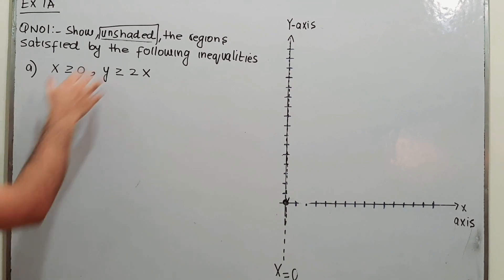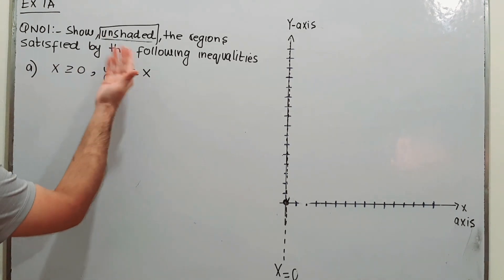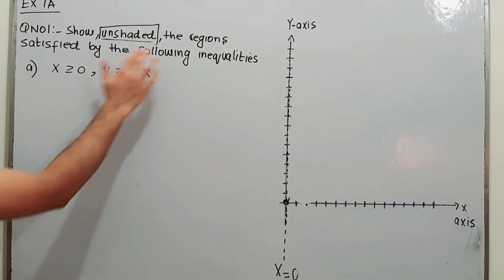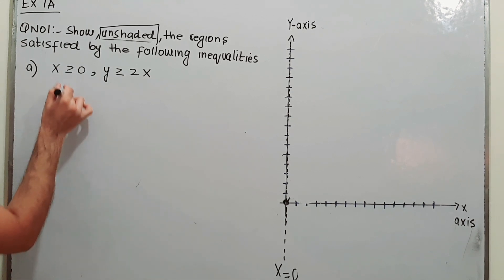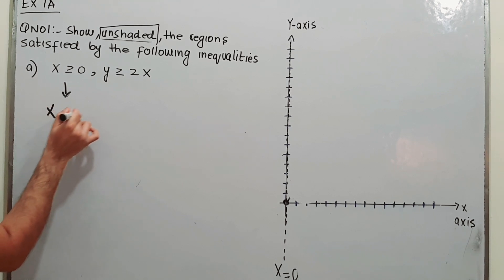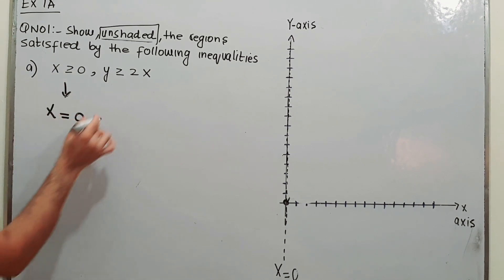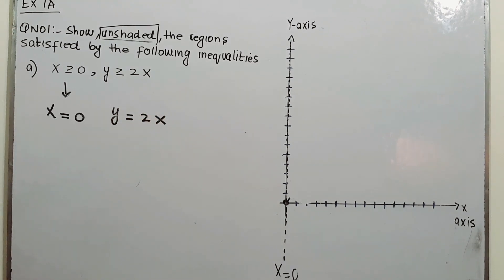Question number 1 says: show unshaded. We have to keep the region unshaded which is our required region — the region satisfied by the following inequalities. We have two inequalities here. First of all we need to identify the lines represented by these equations. This equation is x equal to 0, and this one is y equal to 2x.